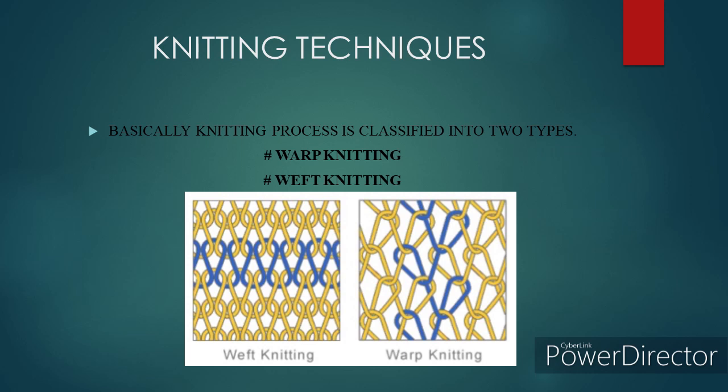Warp yarns are fed from warp beams to a row of needles extending across the width of the machine. Two common types of warp knitting machines are tricot and Rachel. Rachel machines are very useful because they can process all yarn types in all forms. Warp knitting can also be used to make pile fabrics, often used for upholstery.